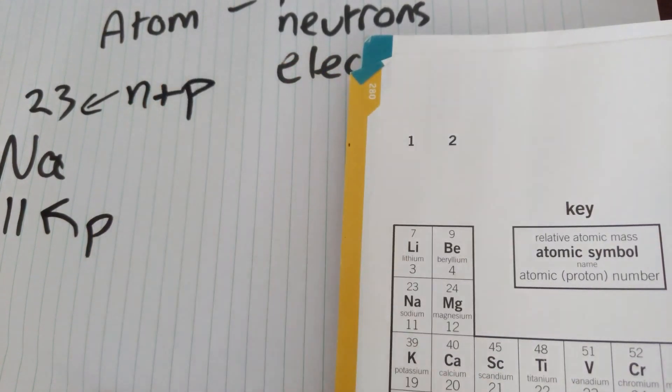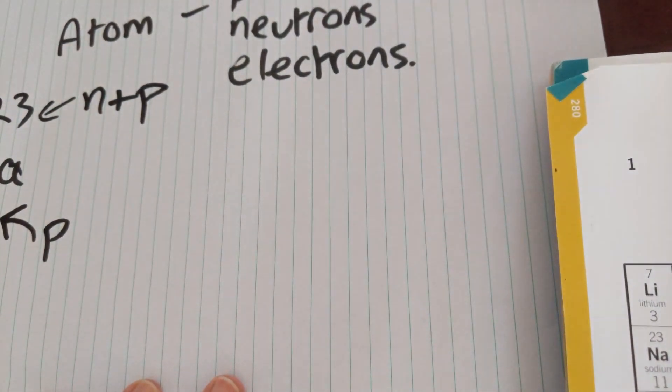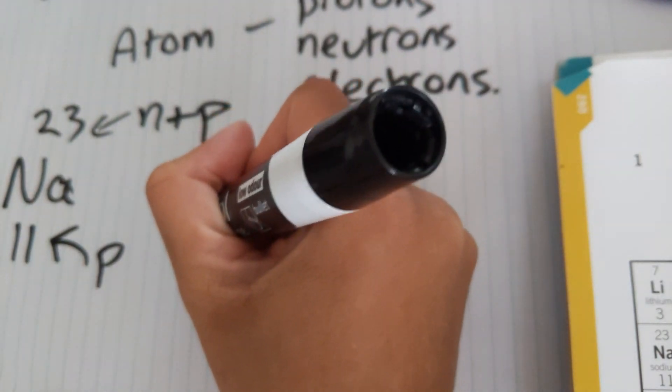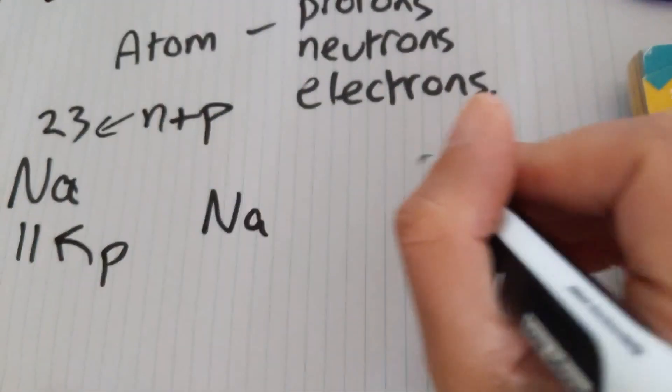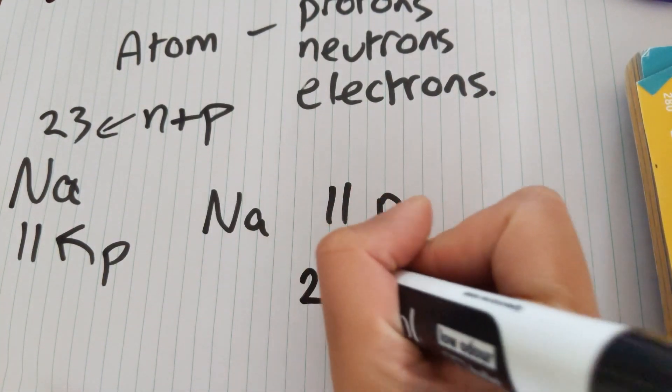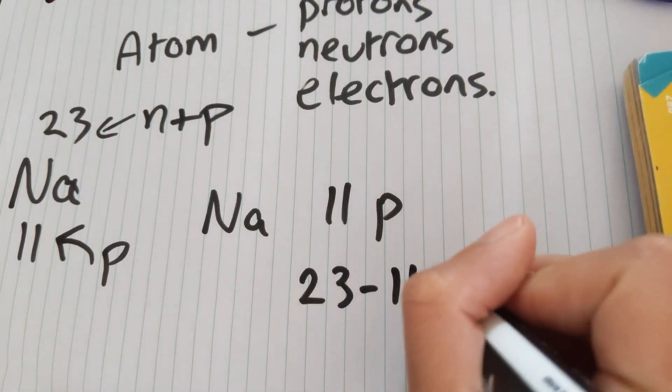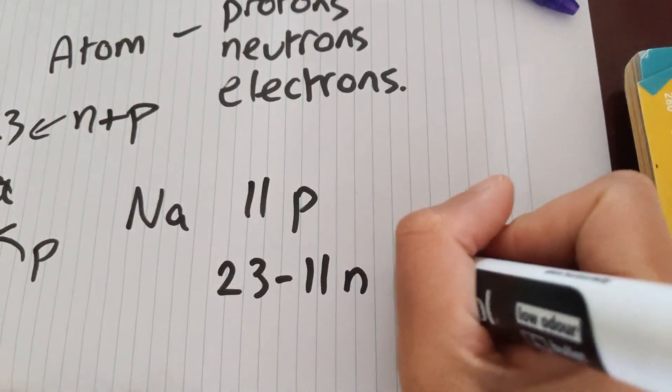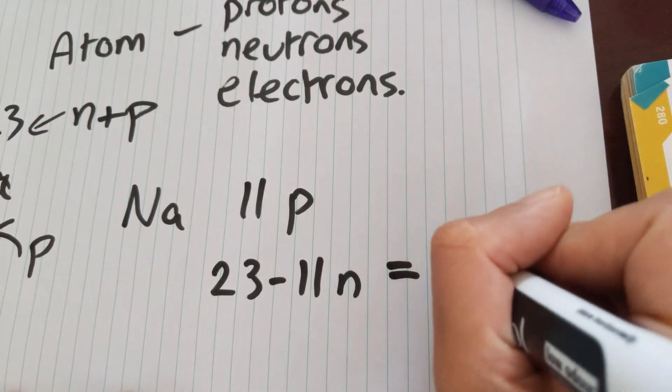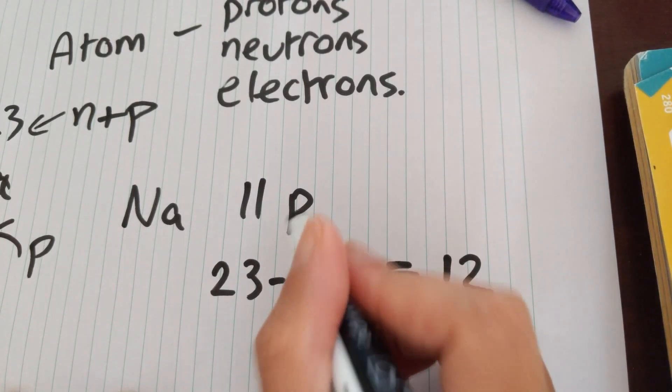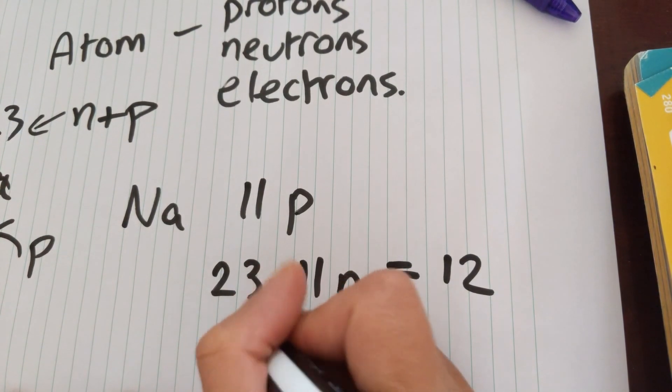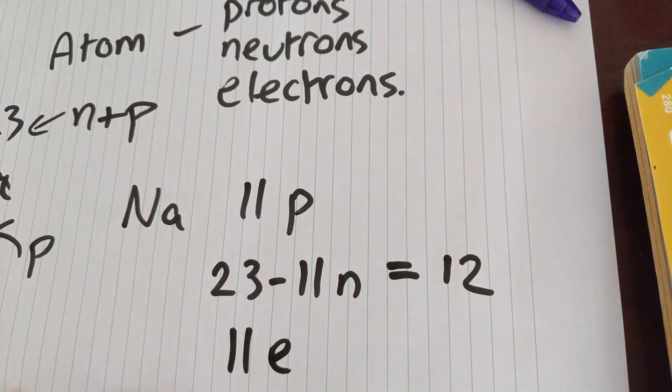And the big number at the top is the relative atomic mass, which tells us the number of neutrons plus protons. So for sodium, we've got 11 protons, we've got 23 minus 11 neutrons, which is equal to 12 neutrons. And then the number of electrons is the same as the number of protons in an atom. So we've got 11 electrons as well.